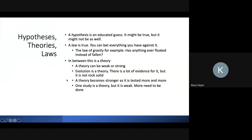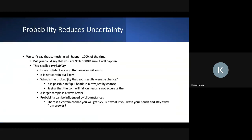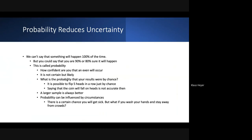If hypothesis and laws are like black and white, theories are gray — all different shades. The more a theory is tested and holds true, the stronger it becomes, but we typically don't say something happens one hundred percent of the time.